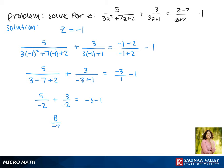So on the left, we get 8/(-2), which equals -4, giving us -4 = -4. And this is true, so z = -1 is our solution.